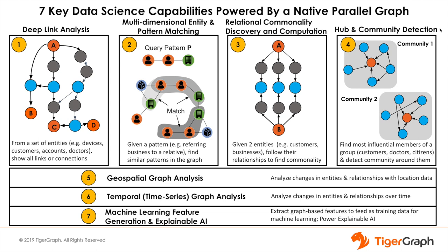Fourth is hub and community detection. Find the most influential members of a group and detect the community around them with TigerGraph. This is useful for finding doctors who can promote and deliver a new drug with higher efficacy to the population that needs it most, merchants who are driving increasing share of wallet for a specific population, and citizens who appear to be influencing a group of people involved in suspicious activities.